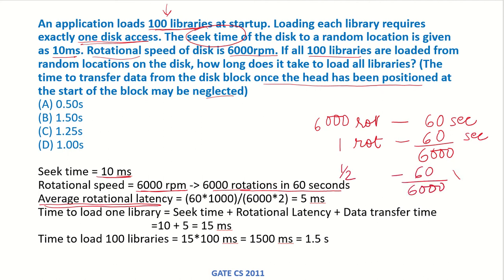Converting to milliseconds (since seek time is also in milliseconds), we multiply by 1000: 60 × 1000 divided by 6000 × 2 equals 5 milliseconds. So the average rotational latency is 5 milliseconds.